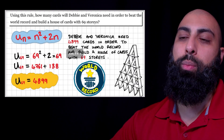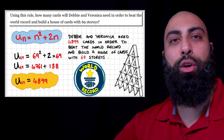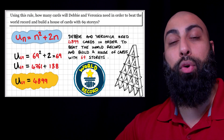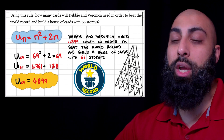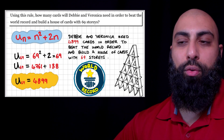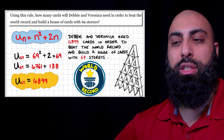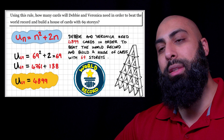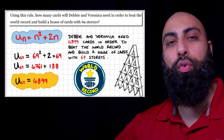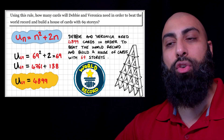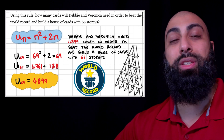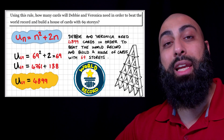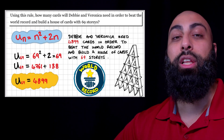The mistake we made was that I worked out u at n equals 69, because that was the number of stories needed to break the world record, but that value of 4,899 was the cards required just for the 69th story. What we need to do is a summation of all the cards — that's going to be the total number of cards they need to break the world record.